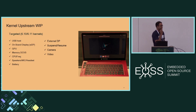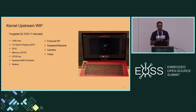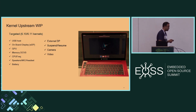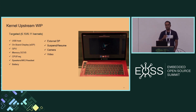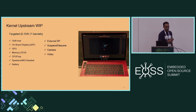Top of the list is primary display over EDP, and then some power management things like getting dynamic scaling working with CPUfreq and memory DCVS — Dynamic Clock and Voltage Scaling — which is the technique used to scale the DDR as well as the caches. Then low power modes through suspend/resume, system-wide suspend/resume, and camera and video are the big missing pieces for now.